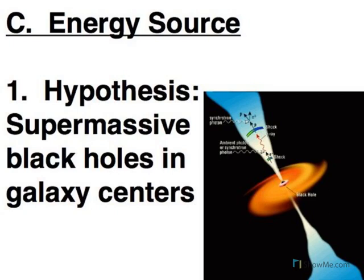These all have a supermassive black hole in the center of the galaxy. That's not surprising — pretty much every galaxy we have studied has a supermassive black hole in the center. Our own Milky Way has a supermassive black hole in the center, and there are even some that have more than one supermassive black hole.